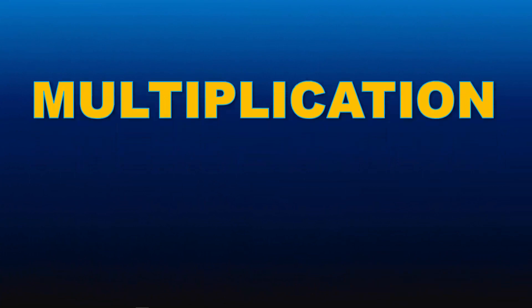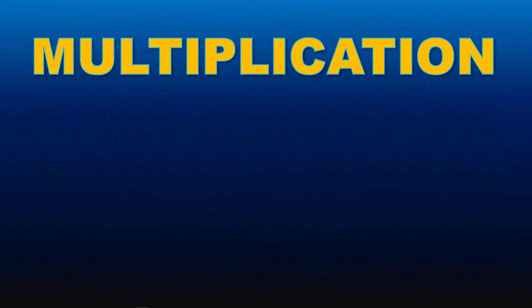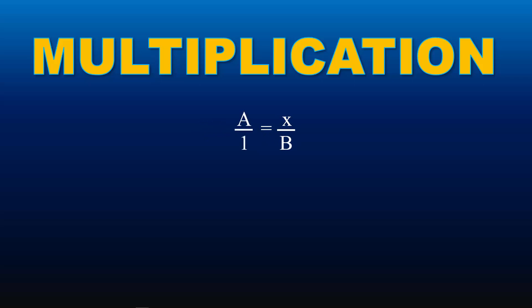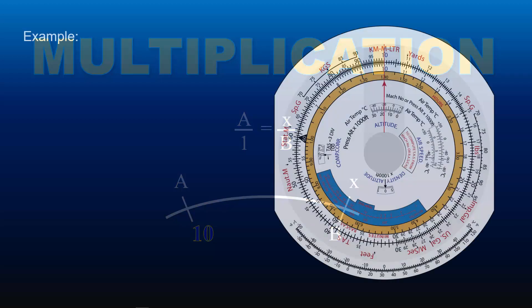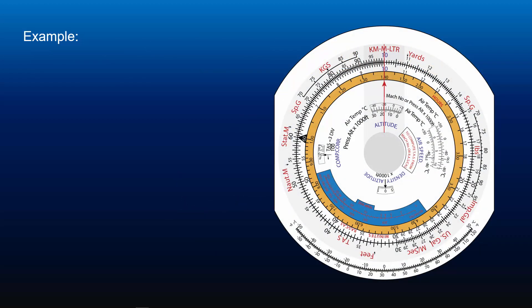The third operation that we will look into is multiplication. Let's say A times B equals X. We can rearrange the equation into A equals X over B, or A over 1 equals X over B. Now that we have converted the equation into ratios, we can arrange the variables onto CRP5 as shown on the screen. Since there is no number 1 marker on CRP5, we will use the blue number 10 index instead.